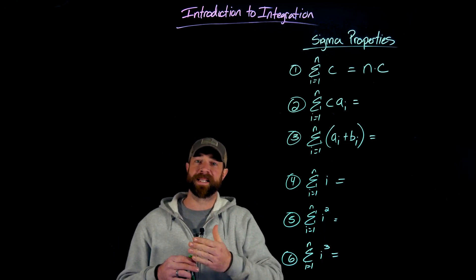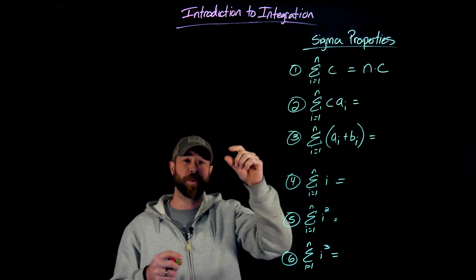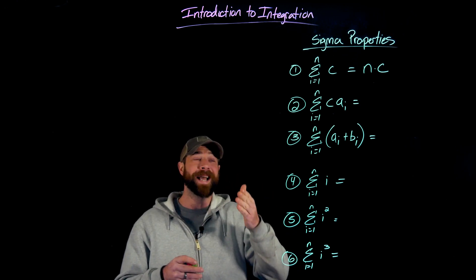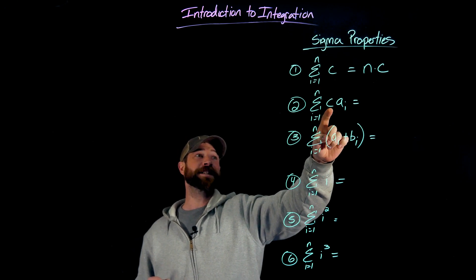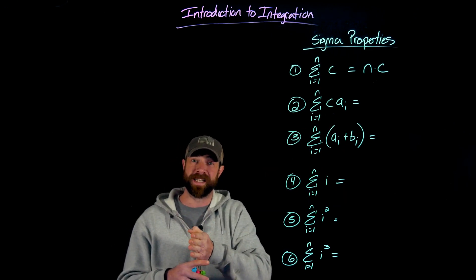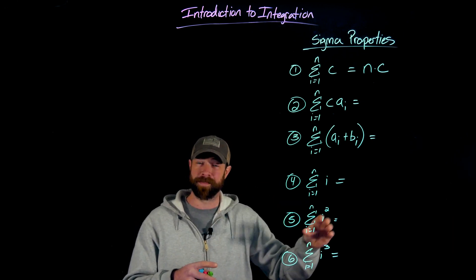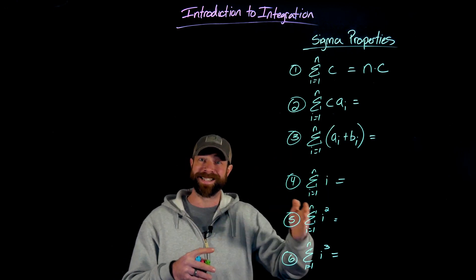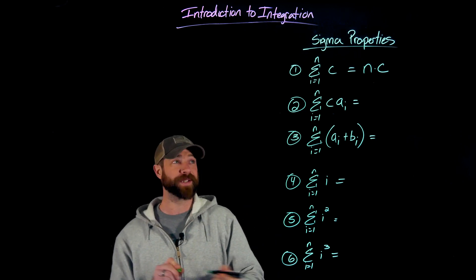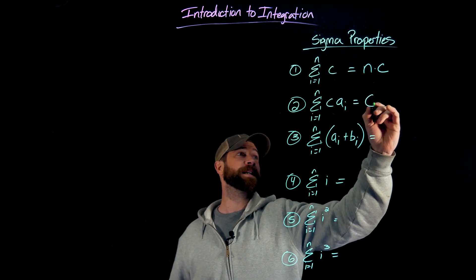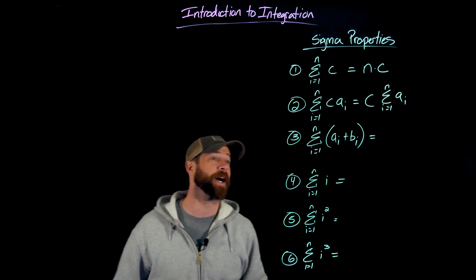For number two and three, a sub i and b sub i simply represent some term that's described in terms of i and does change. So unlike one where every term is just this constant, a sub i means it's going to change as i changes. The important part here is that every term in this sum is also going to have a factor of c. So it's c times something different plus c times something different plus c times something different. But importantly, each term will have a c in it. So we can factor out that c from each of those terms. So what this would become is c times the summation of all of those interesting terms described by a sub i.